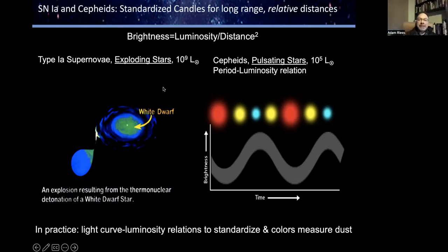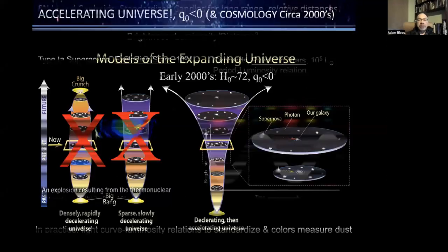In practice, we look for Type Ia supernovae or pulsating Cepheid variables. We standardize them by measuring their periods or other properties. We use the colors we observe to account for dust between us and these objects, which reddens the light, so we can account for that with colors. And we're off to the races to measure distances.